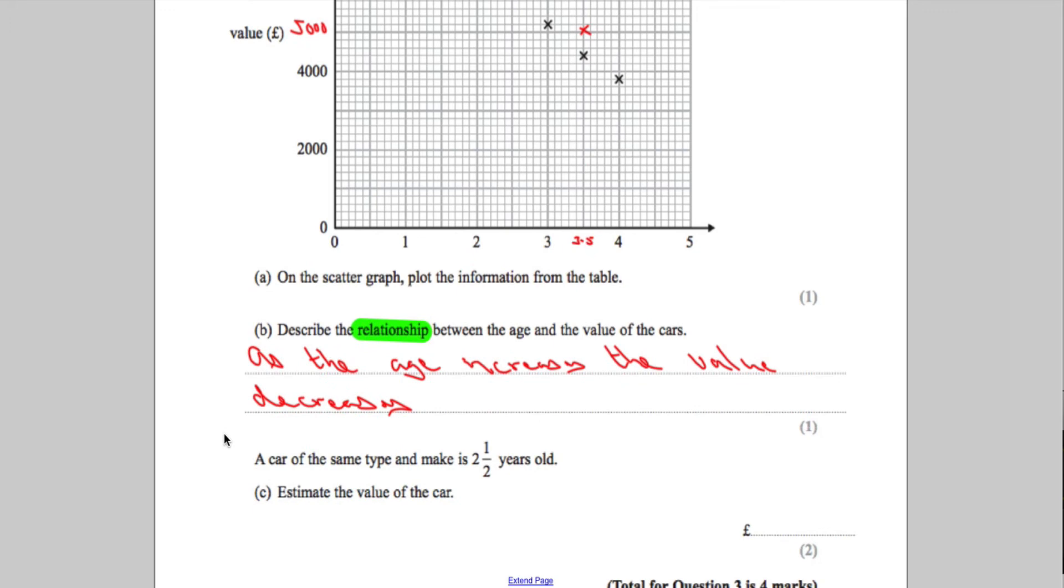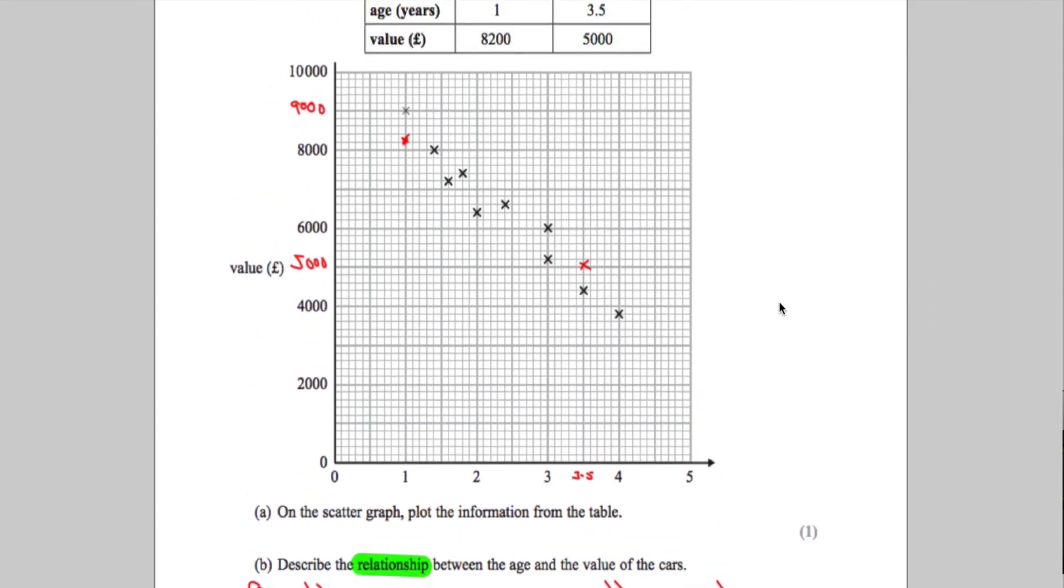Part C says a car of the same type and make is 2.5 years old. Estimate the value of the car. If you're dealing with a scatter diagram and you see the word estimate, you need to know that you should always draw a line of best fit to at least ensure that you get one mark. I'm going to draw a line of best fit here, making sure we've got the same number of dots on both sides of the line.